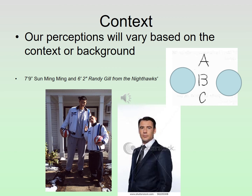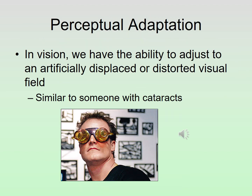Whenever we perceive something, the background or context matters. For example, looking at these two basketball players — Sun Ming Ming at 7'9" and Randy Gill at 6'2" — Randy Gill looks short here, but if you put him beside me, he'd look tall because the context is different. We also have the ability to adjust to a distorted visual field. Someone with cataracts would have spots on their eyes affecting their depth perception, but over time they will adjust and accommodate for that distortion. That is perceptual adaptation.